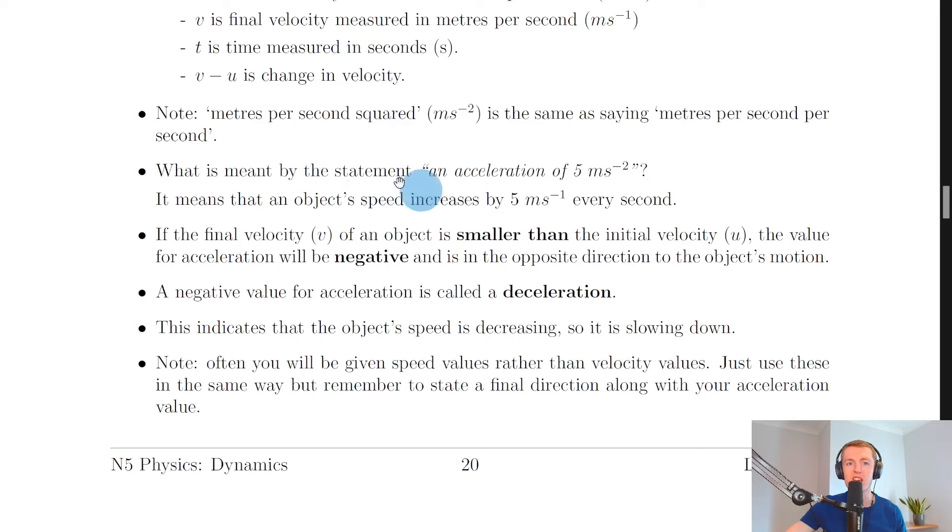And that means we can answer questions like this one here which is what is meant by the statement an acceleration of 5 meters per second squared. So you could be asked something like this in an exam and the way you would answer it is to use a phrase like this. So it means that an object's speed increases by 5 meters per second every second. So that's us using this idea here, the fact that meters per second squared means the same as meters per second per second, to answer this definition question.